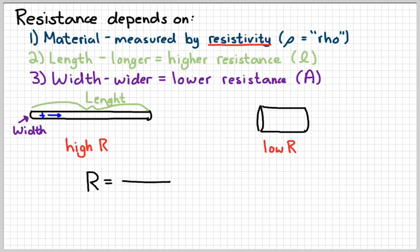So we can combine these ideas into an equation. We can say that the resistance is equal to the resistivity. And then longer resistors have bigger resistance. So I put that on top of a fraction. The opposite is true of the width or area. And so that would go on the bottom of the fraction.